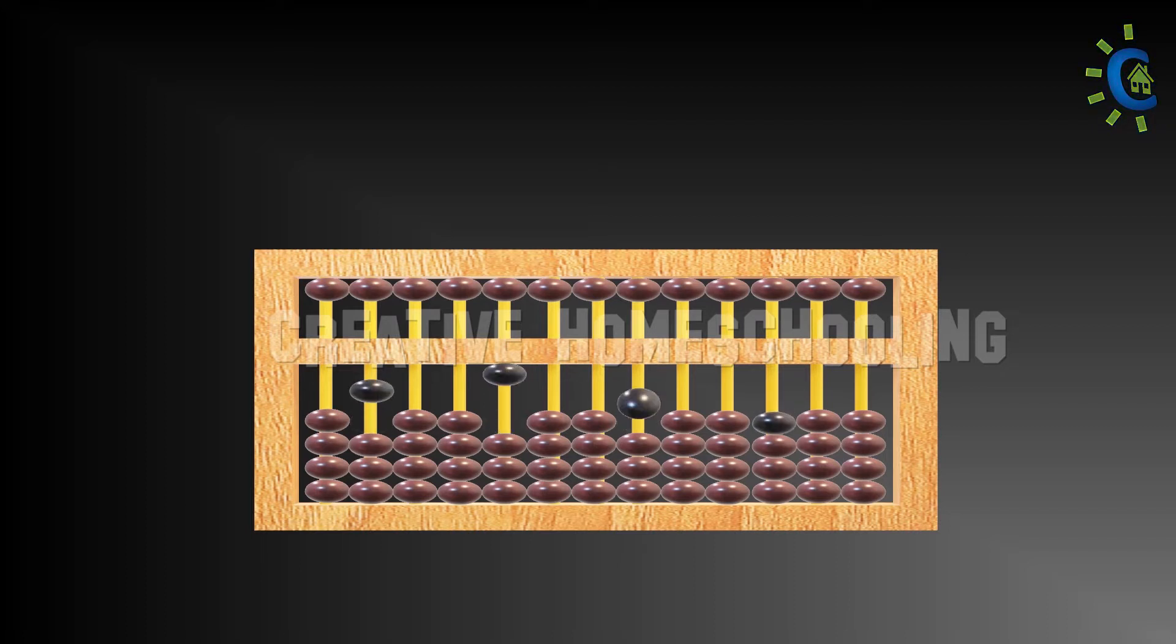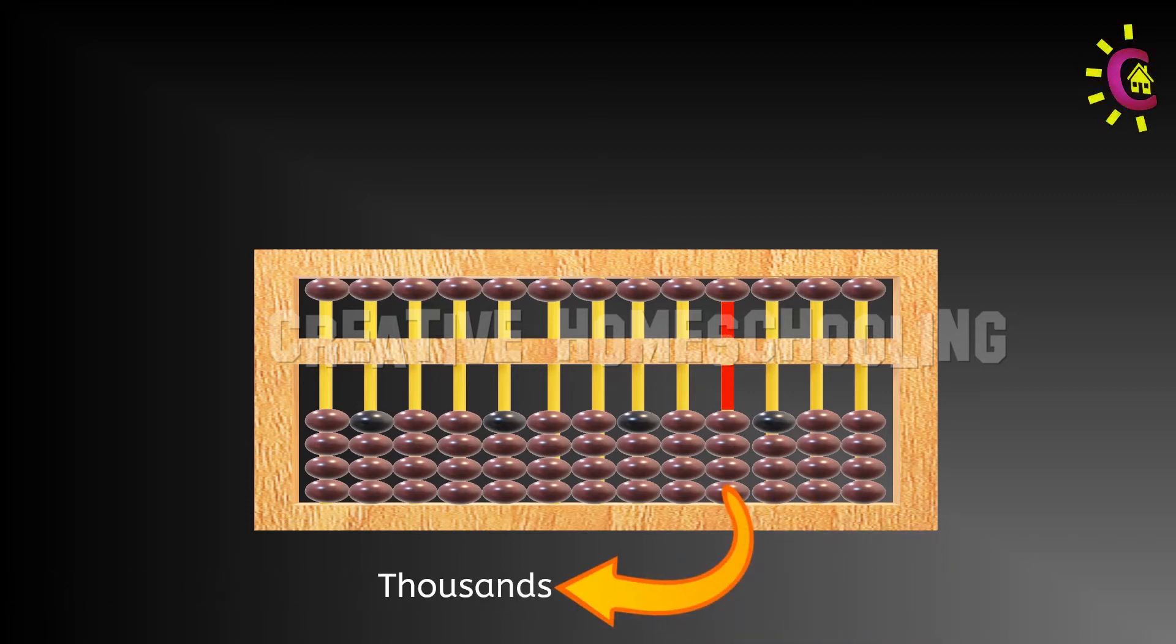We will discuss this in more detail later. Consider the following. This is the place for units. This is the tens place. This is the hundreds place. This is the thousands place, 10,000, and so on.